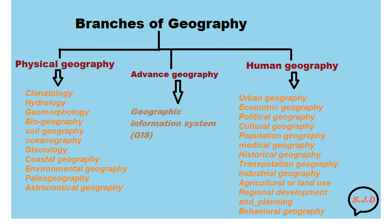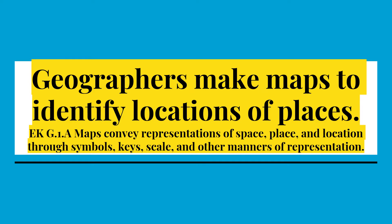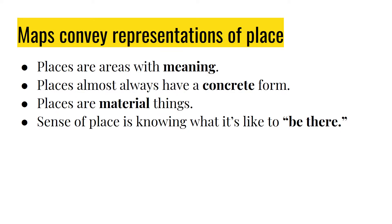I bet you never realized how many kinds of geography there were. Geographers make maps to identify locations of places. Maps convey representations of place. Places are basically what geographers refer to as areas with meaning — they almost always have a concrete, tangible form. Places are material things.